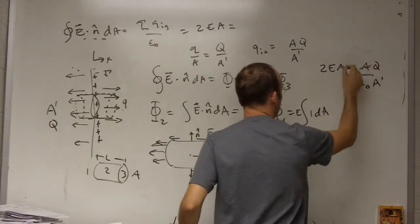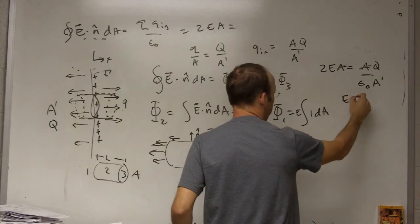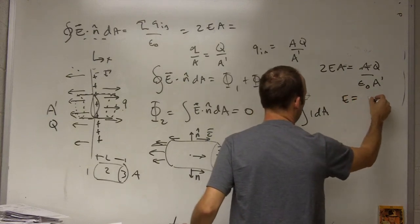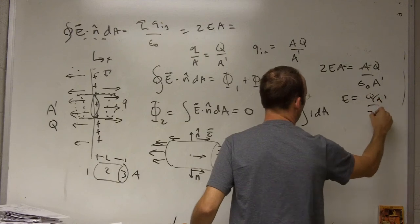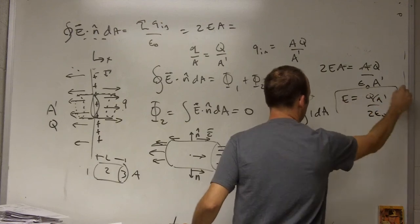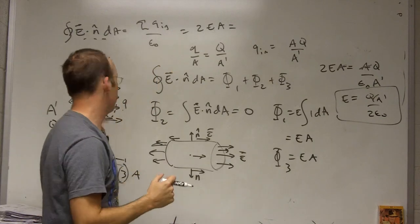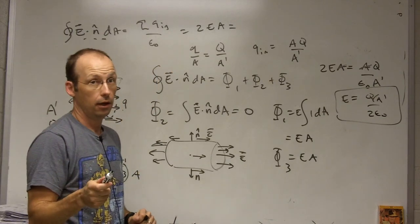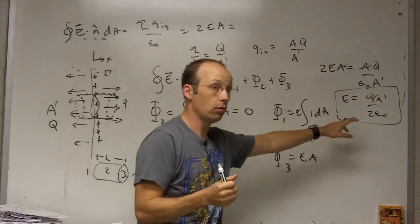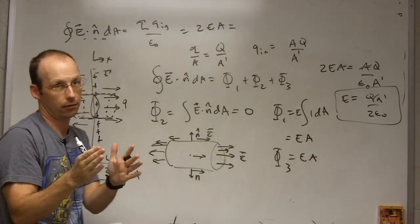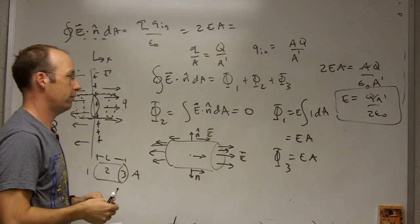So if I put that in up here, I get 2EA equals Aq over epsilon naught A prime. These A's cancel, and I get the magnitude electric field is going to be q over A prime over 2 epsilon naught. That's the magnitude of the electric field near the surface of one plate. And remember, in a capacitor, we don't have that two because we have two plates next to each other.